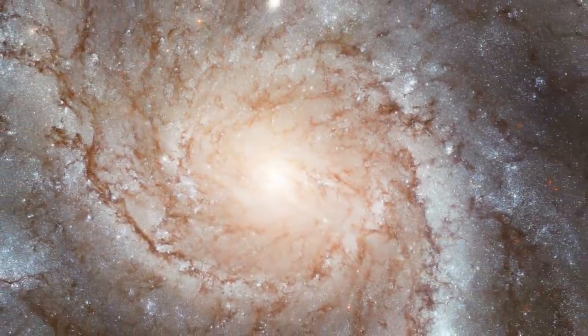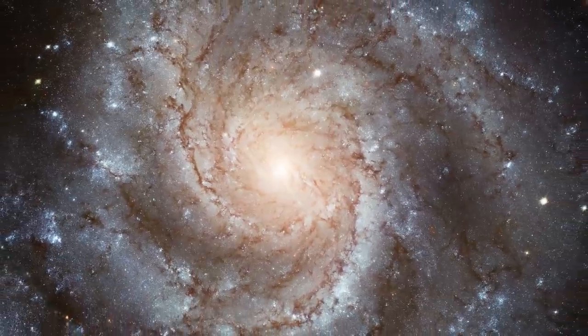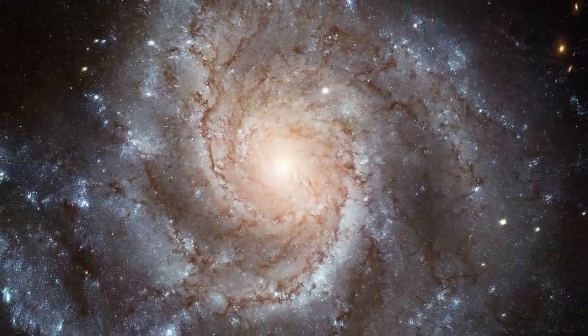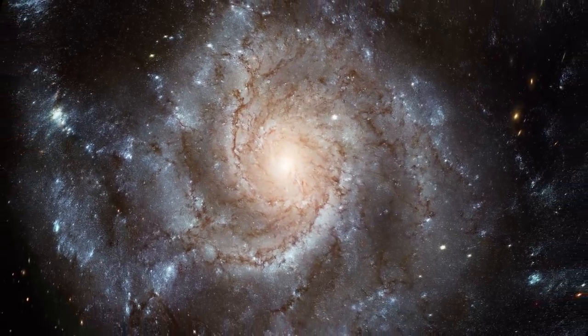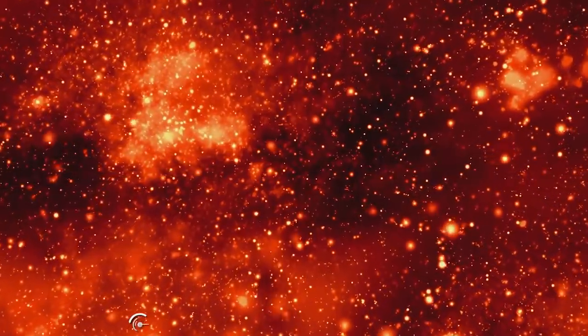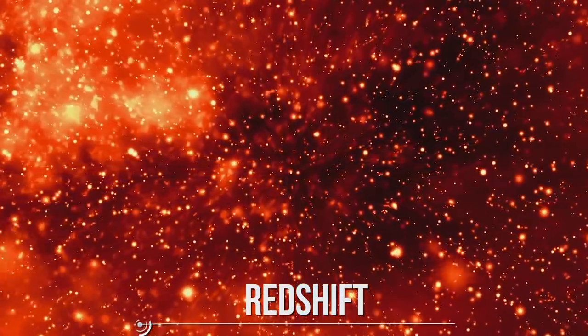If a galaxy recedes from us, the light waves will be partially stretched due to the famous Doppler effect. The same that makes the alarm of an ambulance change in frequency if it's reaching us or going away will have greater wavelengths. Translated towards red, this phenomenon is called redshift.